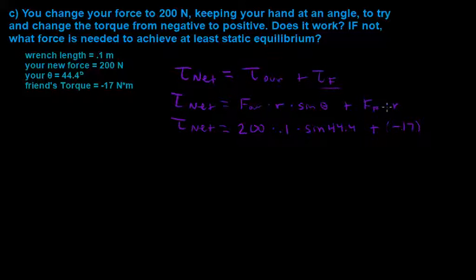And all we have to do is calculate our value here, and then add negative 17 to it. So we plug into our calculator 200 times 0.1 times the sine of 44.4, and what we get is 13.99, and then we add negative 17 to it.